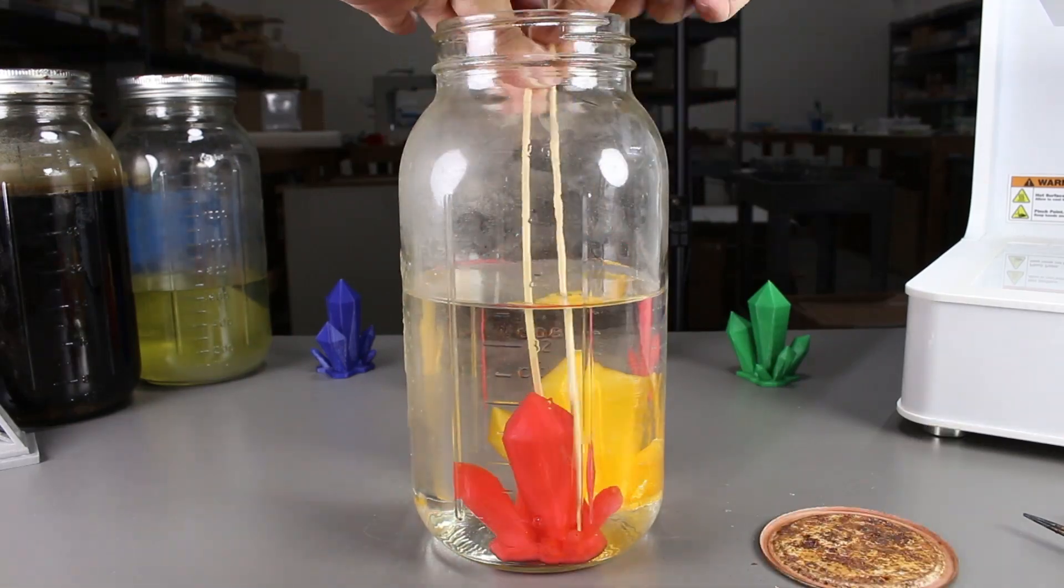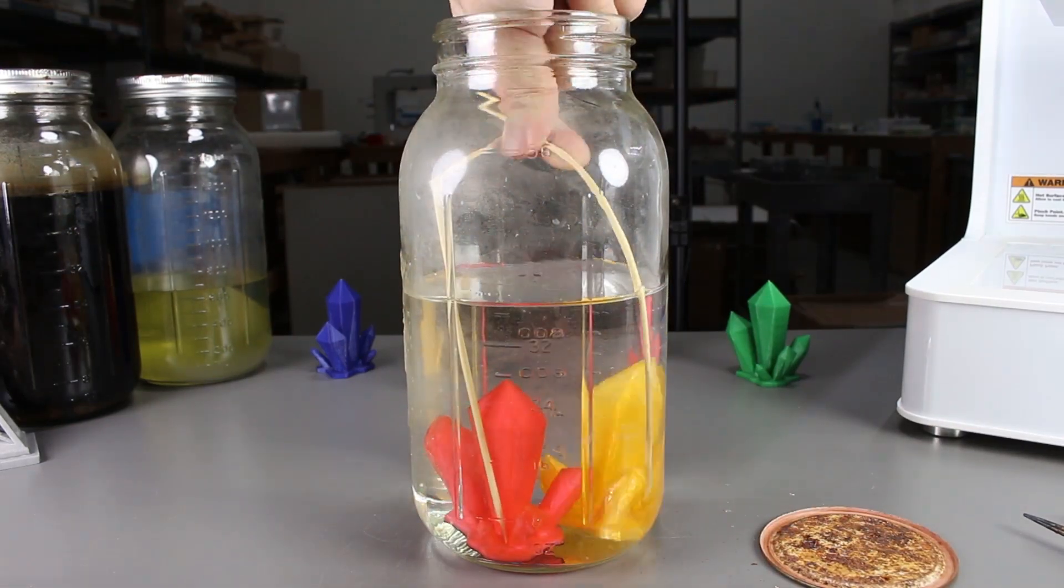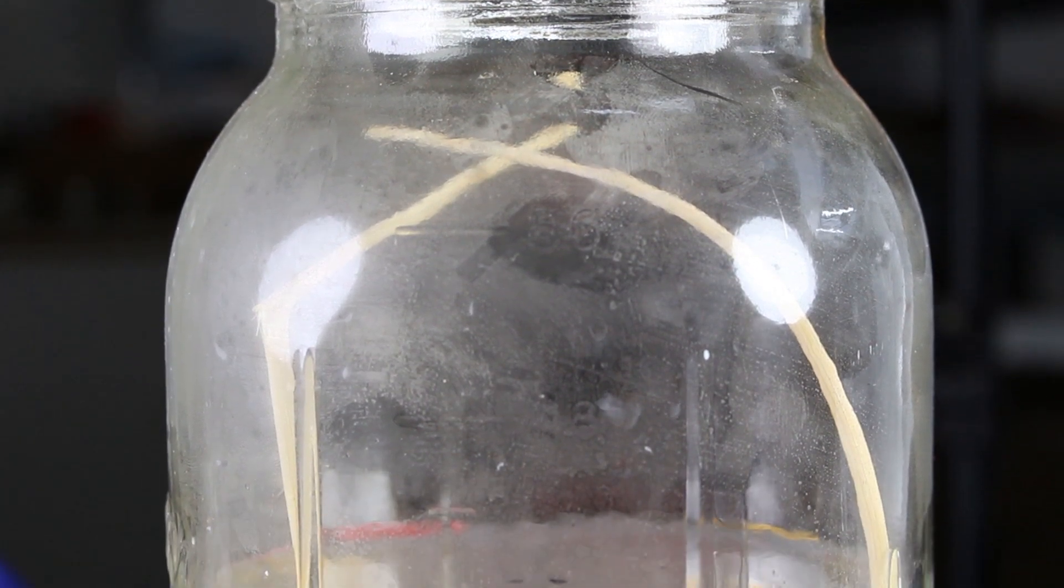Now let's submerge it into a mason jar full of water with another print that was not heat treated so we can find out whether or not our sealing worked.